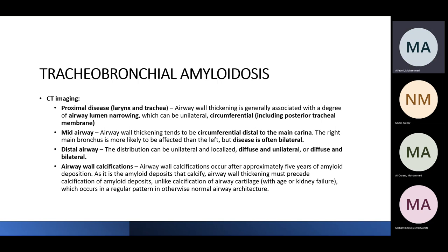On CT imaging, proximal disease shows airwall narrowing and increased tracheal thickness, typically circumferential — including the posterior tracheal membrane — which helps differentiate it from other tracheal diseases. Mid-airway involvement can be unilateral or bilateral, circumferential to the main carina. Airway calcification can occur, and when present, it is diffuse above the amyloid deposition and not restricted to the cartilage alone, involving the entire trachea.